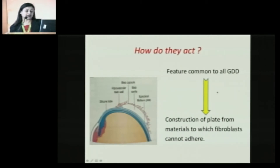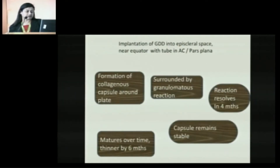How do these tubes act? A feature which is common to all GDDs is that the construction of the plate is from such a material to which the fibroblasts cannot adhere. So, as you can see, the implant is sitting on the sclera. There is a bleb cavity here, and there is a fibrous capsule here, which is the main feature for all the filtration that happens through these valves.